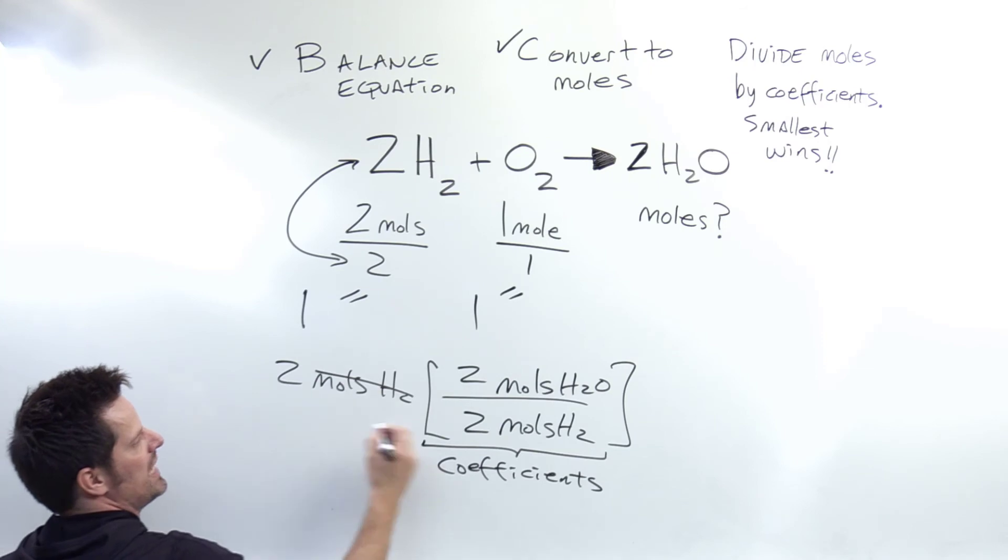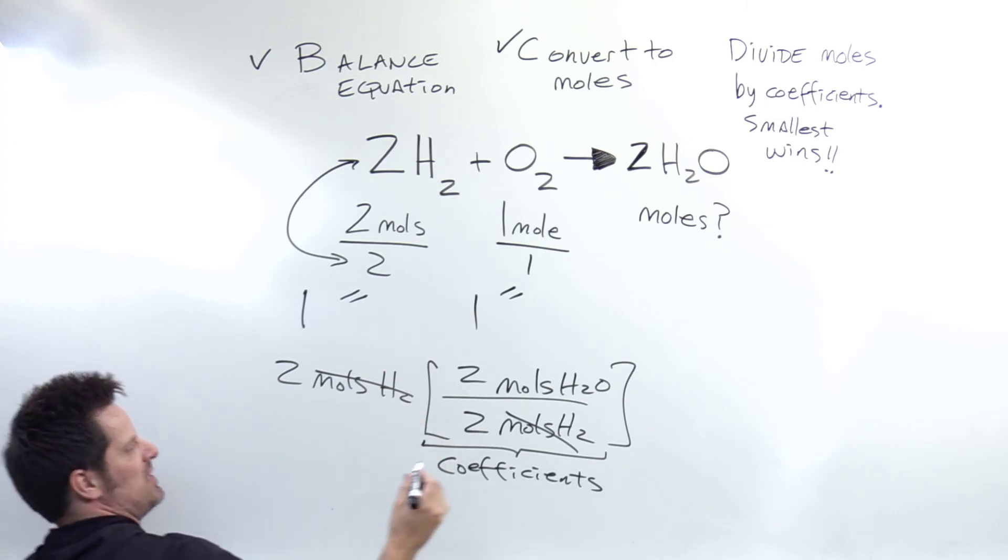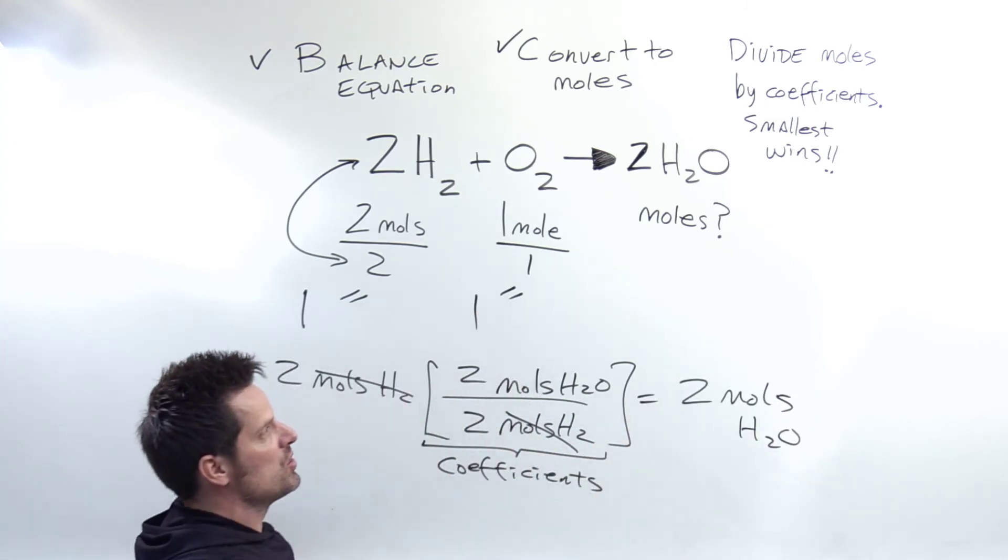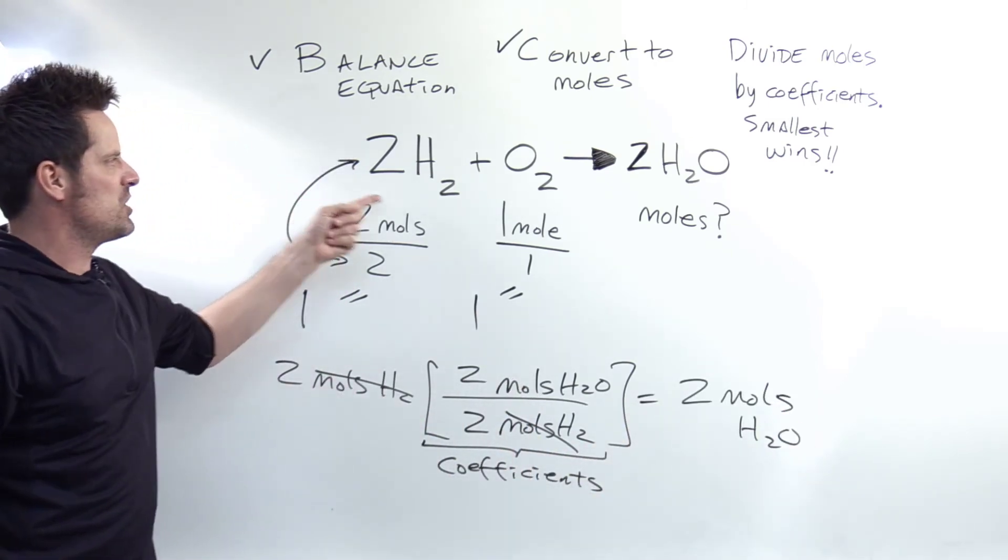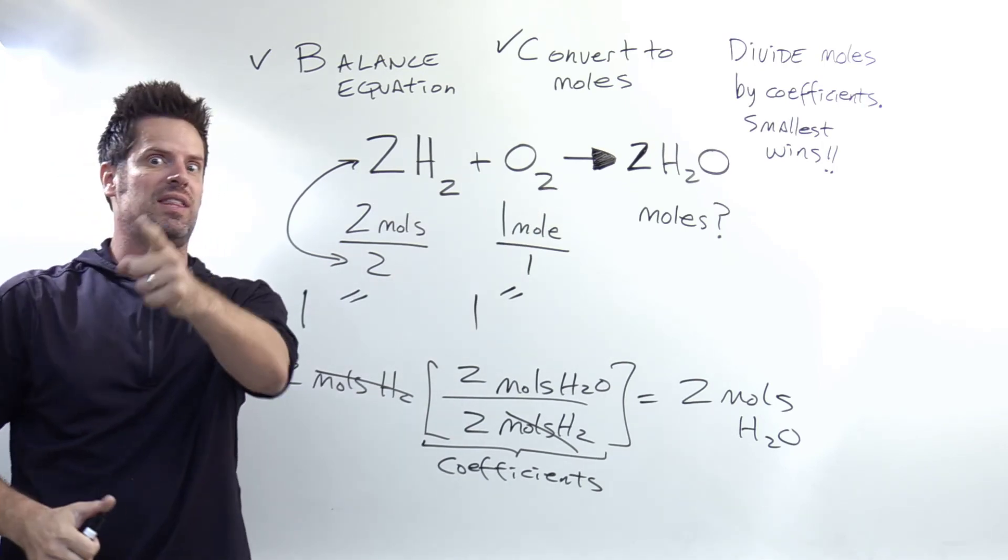You'll notice that unit-wise, the moles H2 cancel each other out, and I'm left with units of moles H2O. So now it's just number crunching. Two times two is four divided by two gives me an answer of two moles H2O. Now again, based on the ratios that you can see here, that's something that you would naturally predict, but that is the answer to this question.